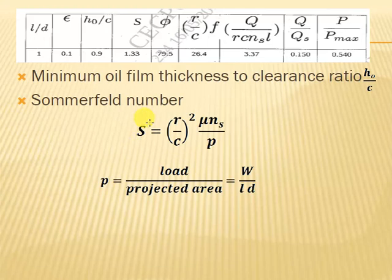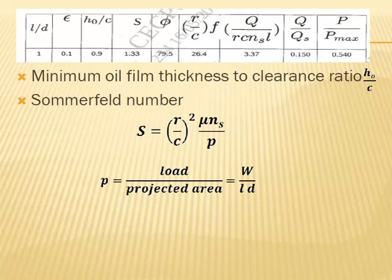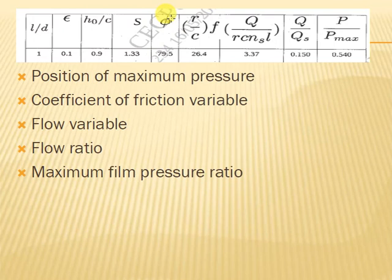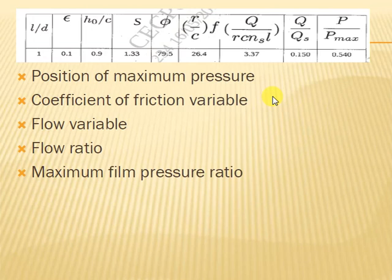The Sommerfeld Number determines the quality of lubricant, meaning the viscosity of the lubricant. This makes it a very important parameter. Next is phi (Φ), the position of maximum pressure. Phi gives the angular position of maximum pressure in the fluid film.